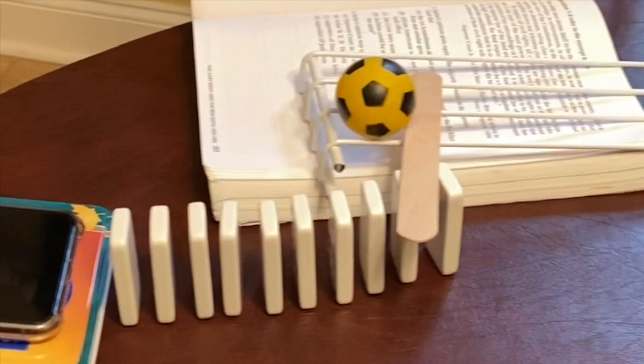The popsicle stick rotates and ultimately falls off of the ramp, clearing the path for the ping pong ball and allowing it to move down the incline plane.